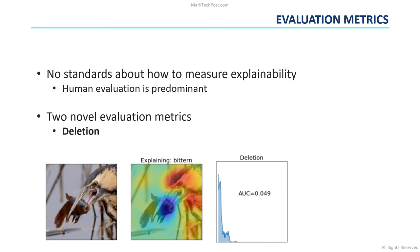On the other hand, the insertion metric adds pixels to the image based on their importance. In this way, it captures the ability of the pixel to synthesize the image, increasing the probability of the class of interest. In this case, a high curve indicates a good explanation.